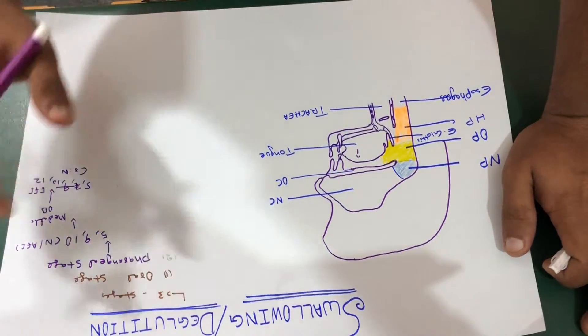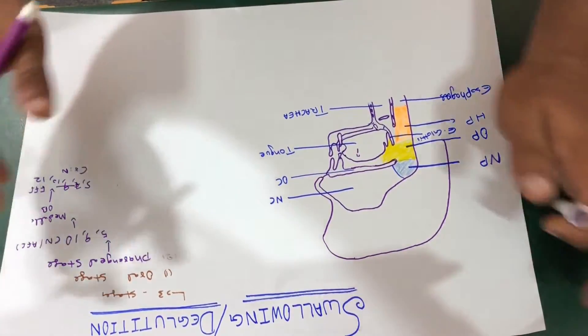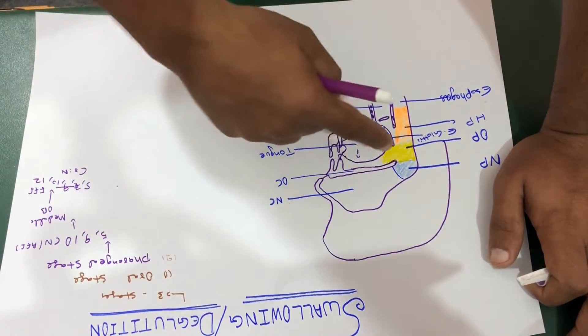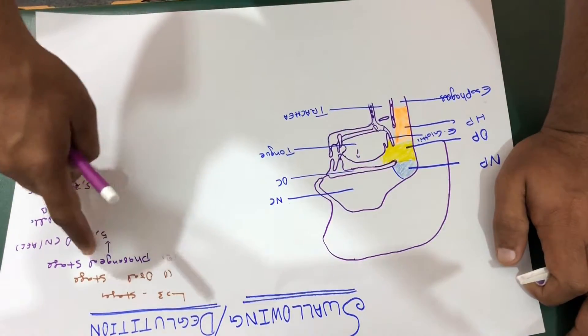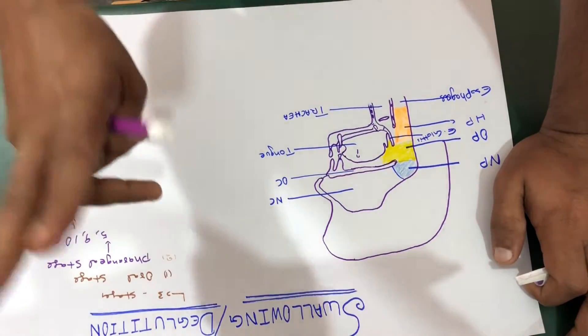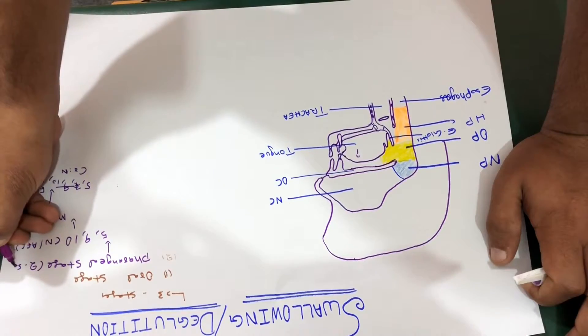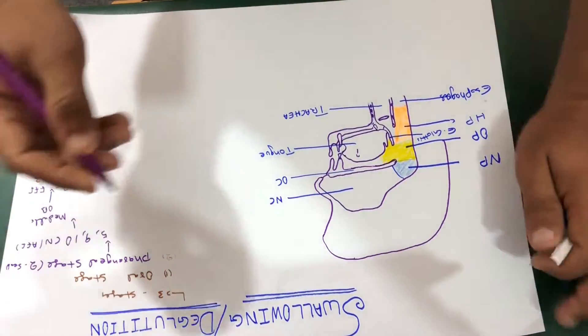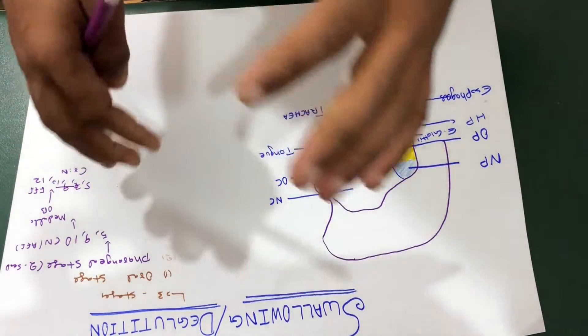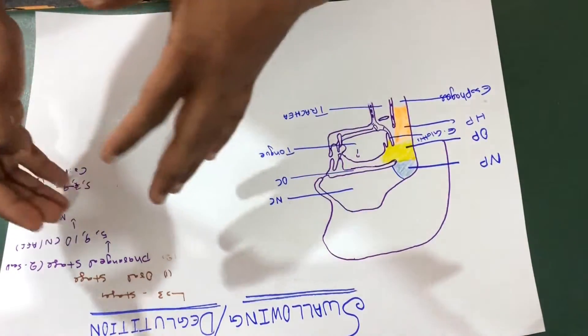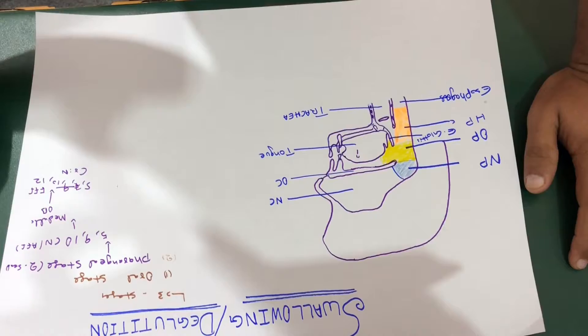So this is actually a highly coordinated specific timed reflex, which actually takes about two seconds. If we're going to talk about the events of this stage, which is the pharyngeal stage, it will be like this.